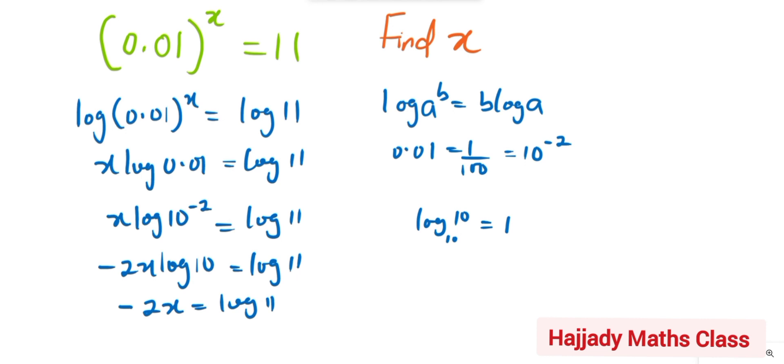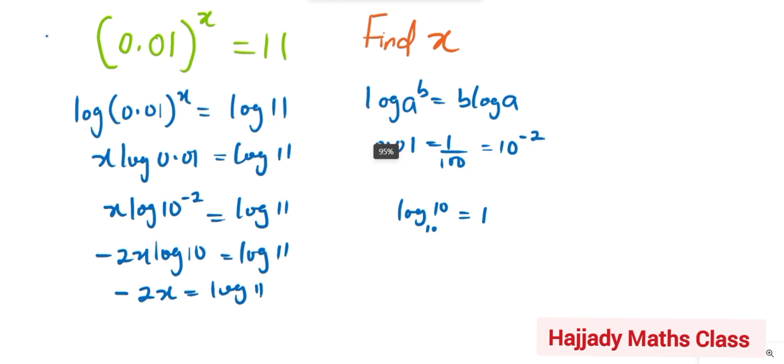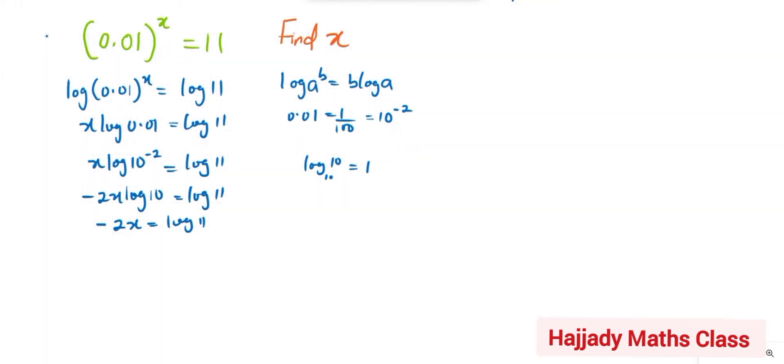From here, dividing both sides by -2, we have x = (-1/2) log 11. I'm still using the first law of logarithms here.